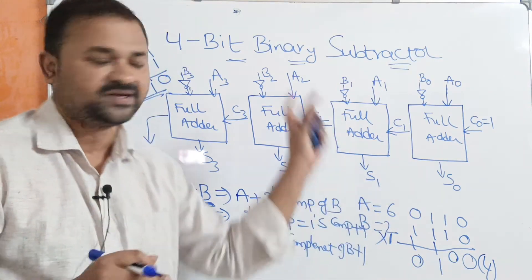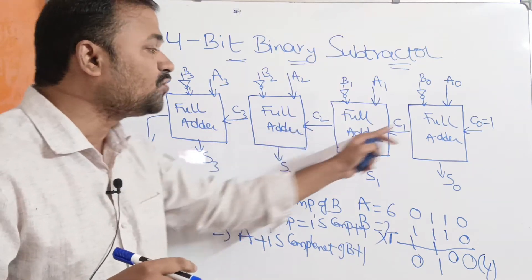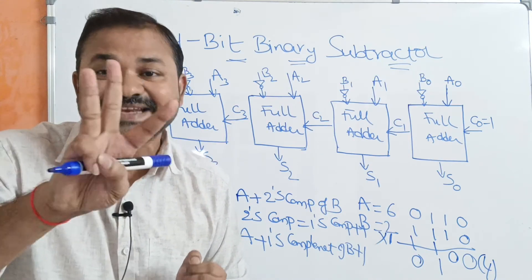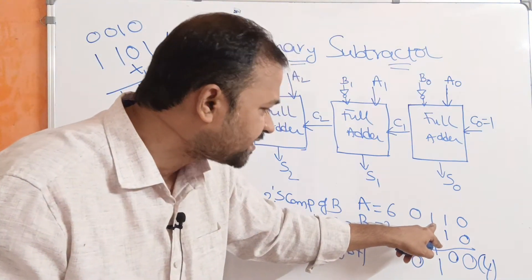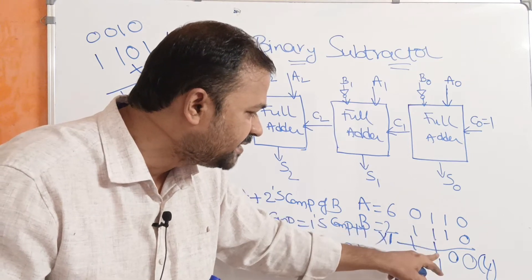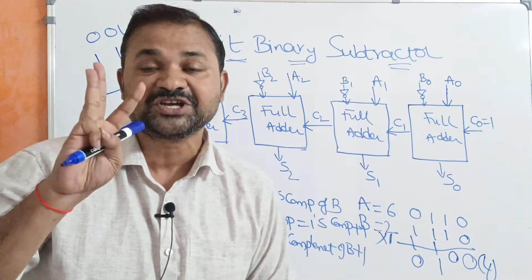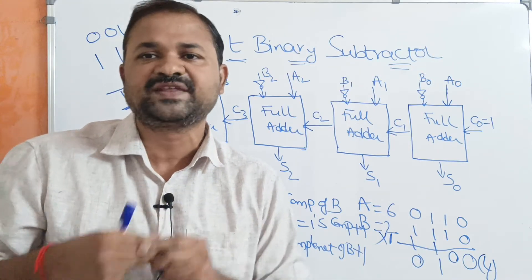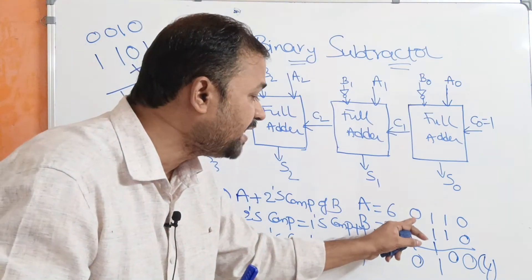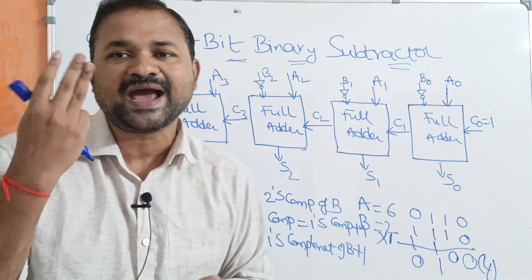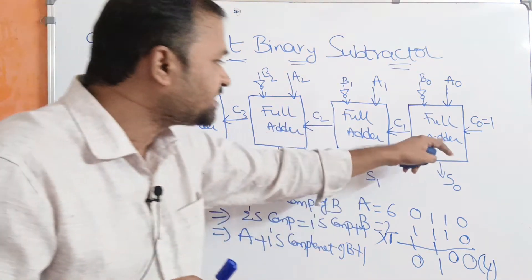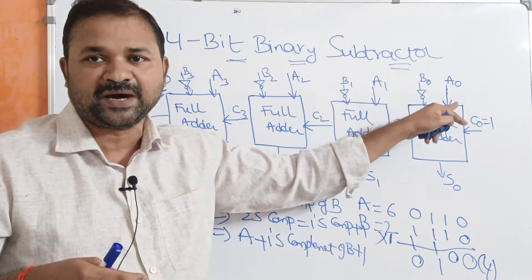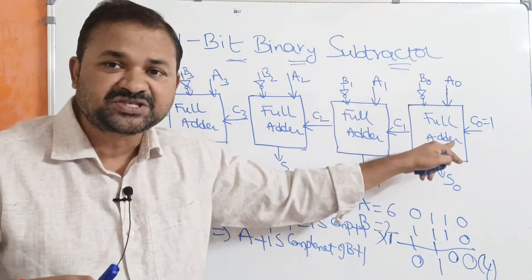Now we have to perform this operation with the help of a logic circuit. Here we have taken 4 full adders. Why? Because a full adder can perform an addition operation on 3 bits: the A bit, the B bit, and the carry. Since the binary numbers have a capacity of 4 bits, we need to add 4 bits, so we use 4 full adders. The first full adder performs the addition operation on A0. The symbol shown here is a complement symbol, so B0-bar will be passed to the full adder, then B1-bar, B2-bar, and B3-bar.